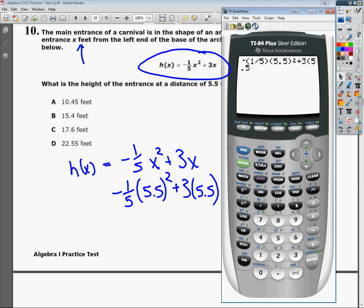So negative 1 over 5 times 5.5 squared plus 3 times 5.5. I try to put my x term in parentheses a lot because if it's negative, it makes it easier to get the correct answer. For instance, if I have negative x and need to plug in negative 2, if I just type negative 2 down, that would be wrong. It's actually negative negative 2. So it's much easier if you put it in parentheses. That's personal preference more than anything else.